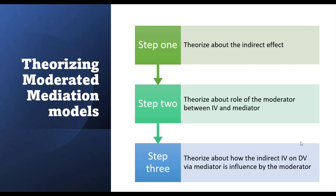Now for moderated mediation models — how to theorize them. It also consists of three steps. In the first step, we theorize about the indirect effect: the impact of IV on DV via mediator. In the second step, we examine how the relationship of IV on mediator is influenced by a moderator. In the third step, we theorize about how the indirect effect of IV on DV via mediator is influenced by the moderator.